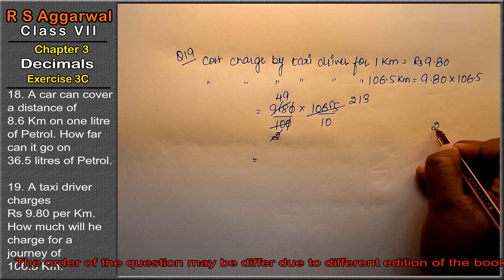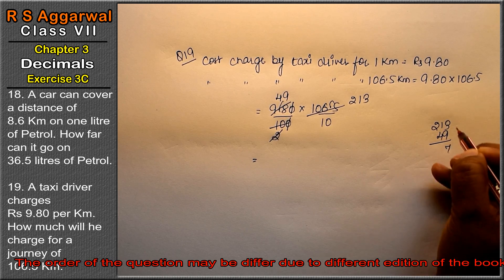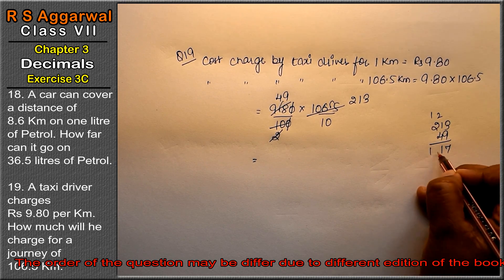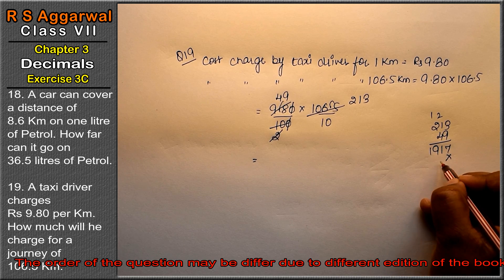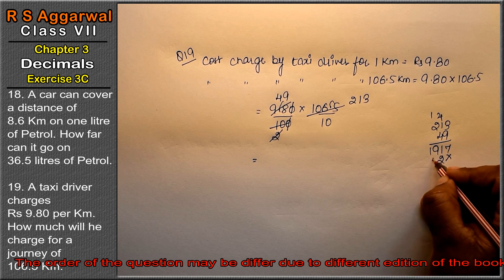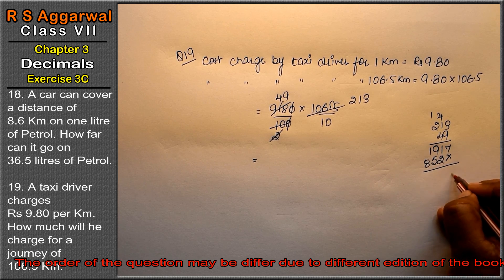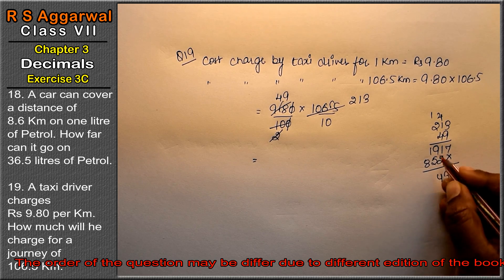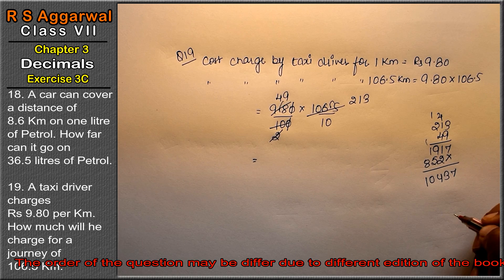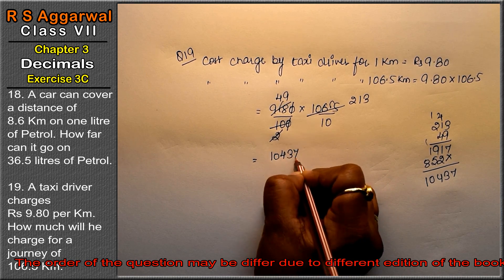So 213 into 49. 9 threes are 27, 9 ones are 9, 10, 11. 9 twos are 18, and 19. 4 threes are 12, carry 1. 4 ones are 4, and 5. 4 twos are 8. Right, friends? Now 7, 3, 14, carry 1, 10. So how much did we get? 10,437.